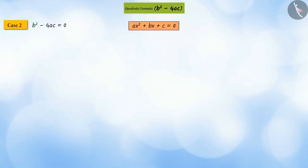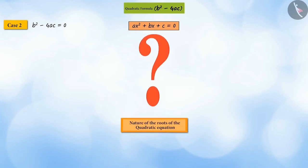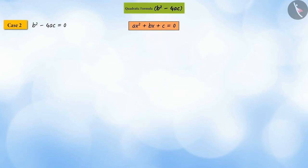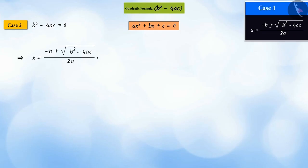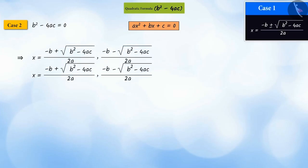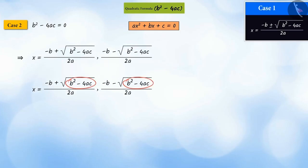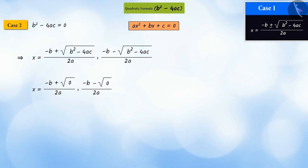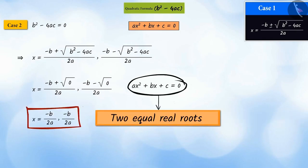Similarly, if we consider b² - 4ac as zero, what would be the nature of the roots of the quadratic equation? If we substitute zero in place of b² - 4ac, then we get two equal real roots, that is, x = -b divided by 2a.